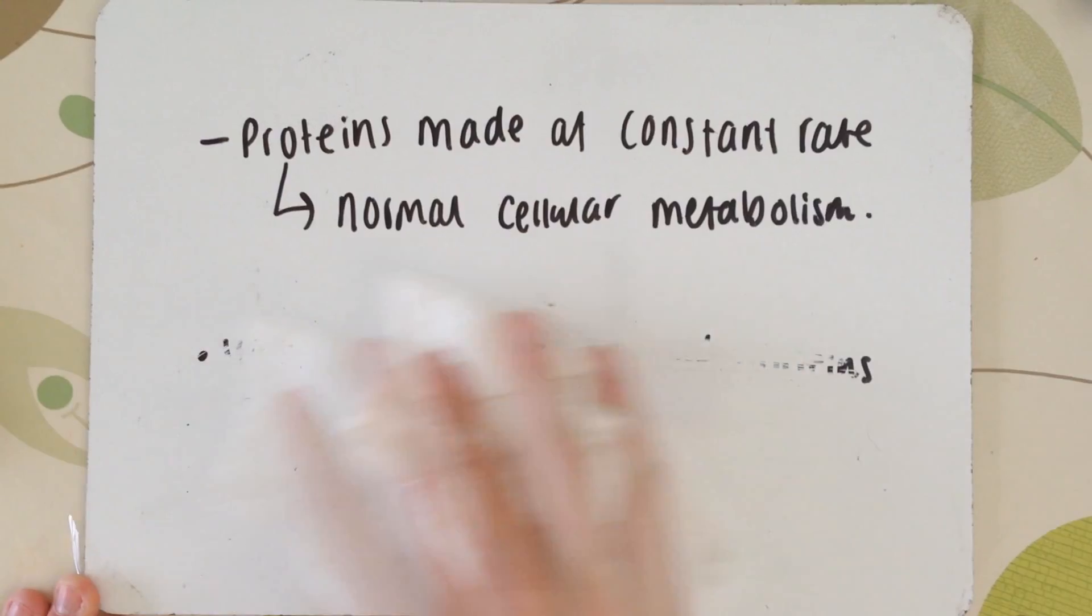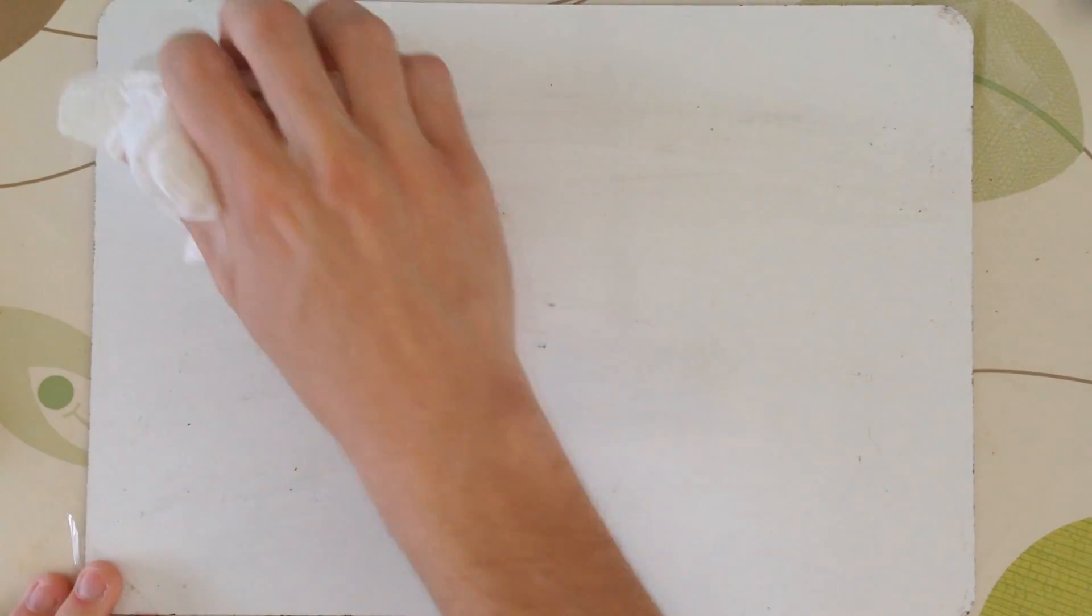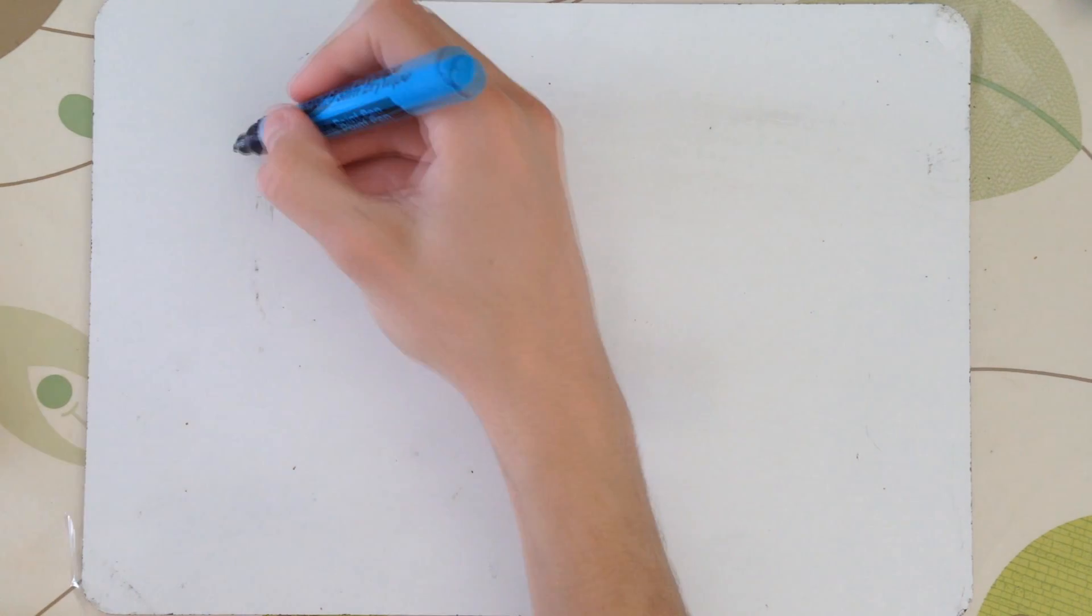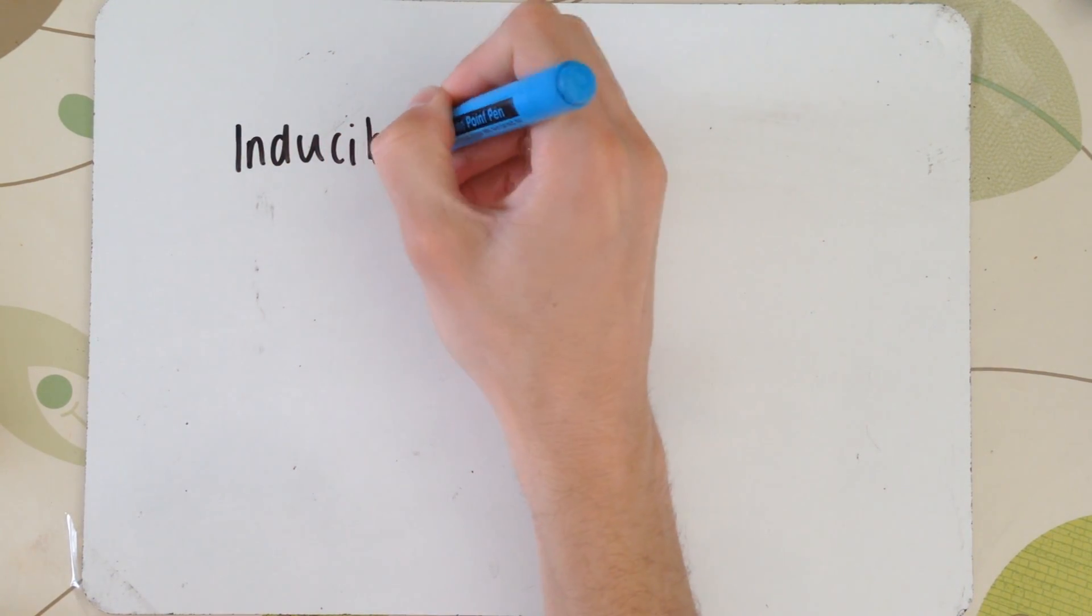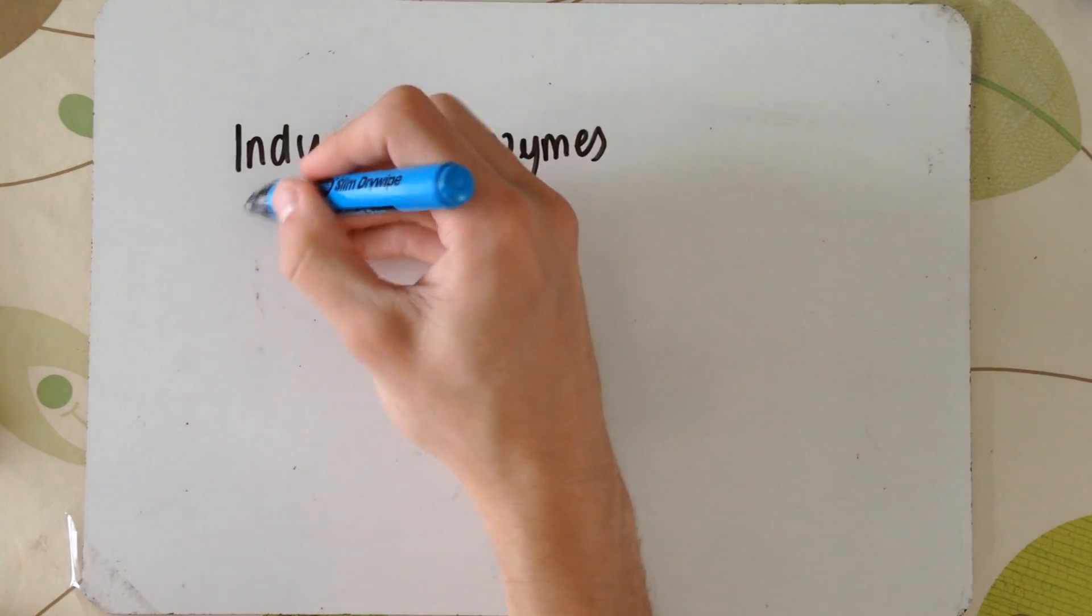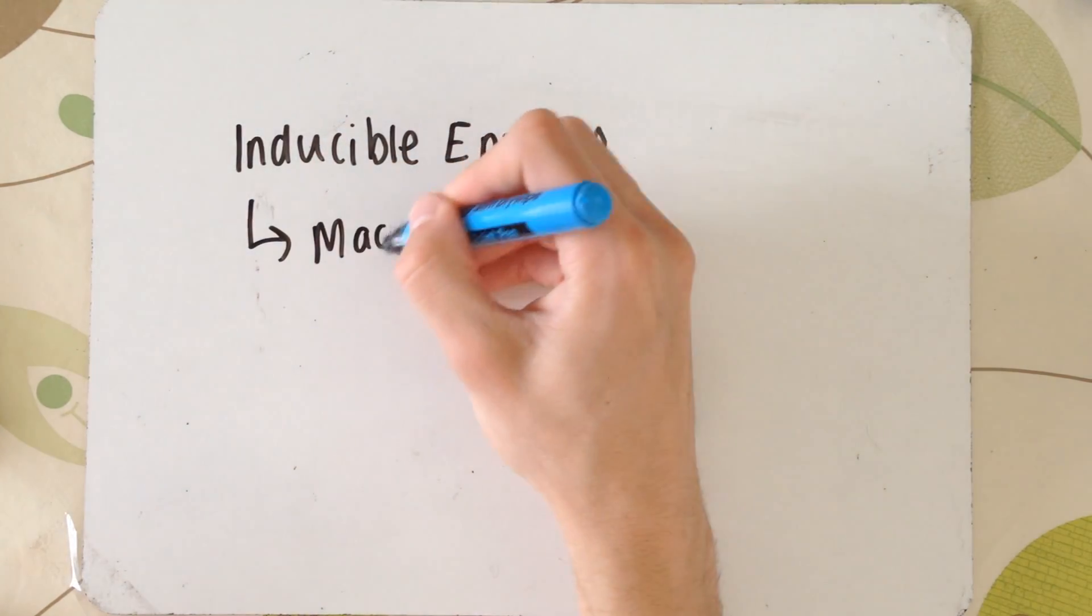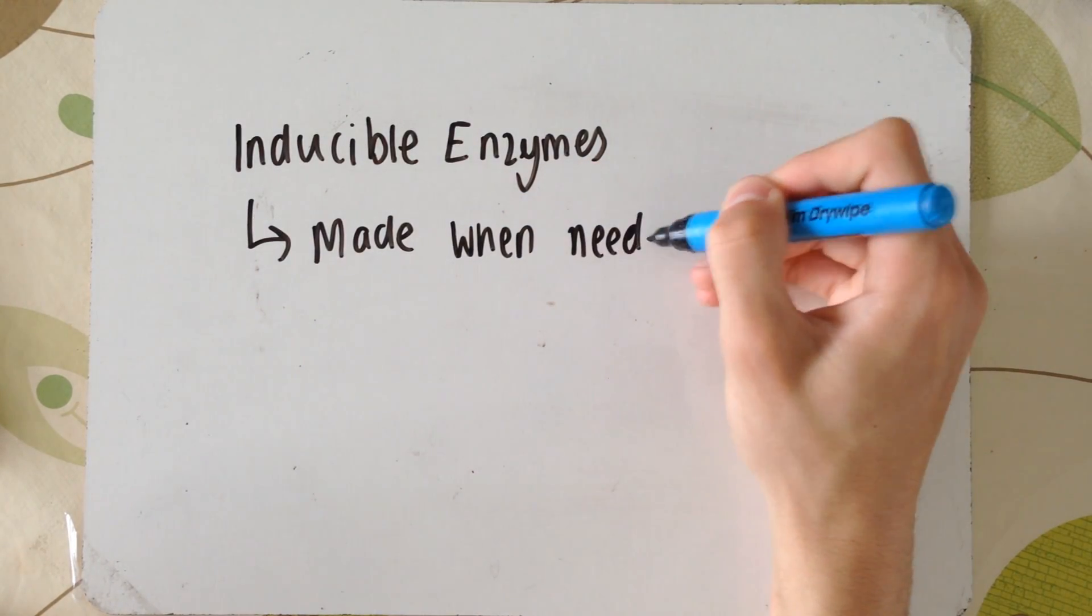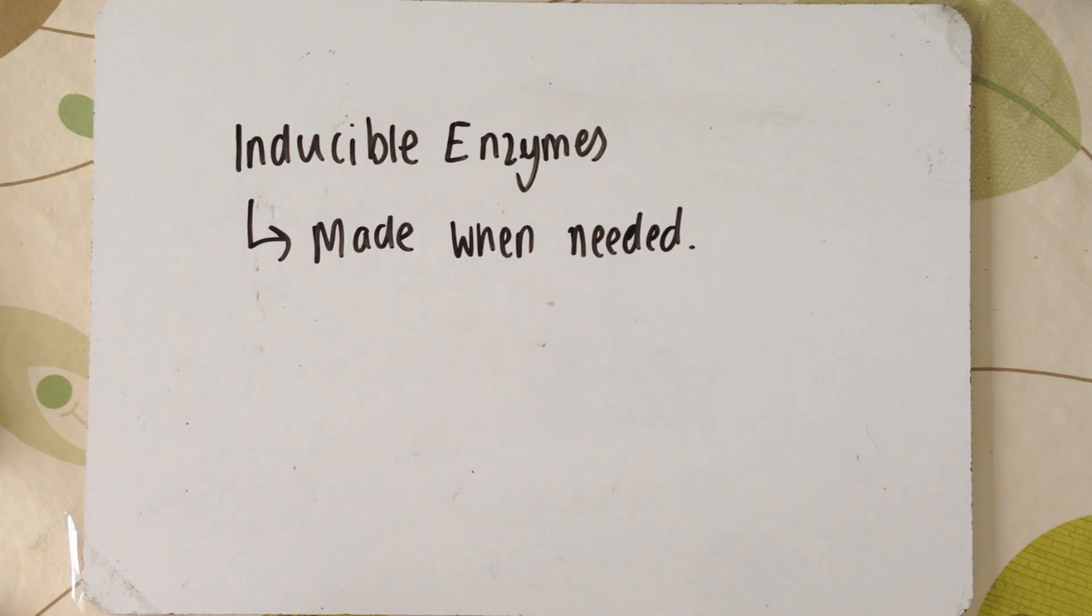So, inducible enzymes are essentially made when needed. You may have a few of them hanging around anyway, but when you need them, for example, the lac operon works by putting in a different growth medium, E. coli or yeast or things like that, growing in a different substance. And they obviously need different enzymes being produced at varying rates to be able to adjust to these different circumstances and this different medium.